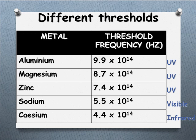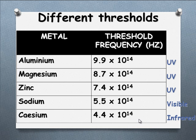Different metals have different threshold frequencies. Aluminium has a threshold frequency up in the UV range. Sodium's threshold frequency is in the visible region. Cesium is down in the infrared, so any form of visible light would cause photoelectrons to be ejected from it.